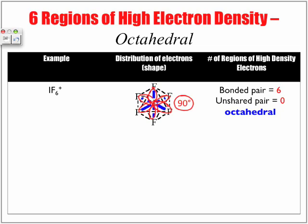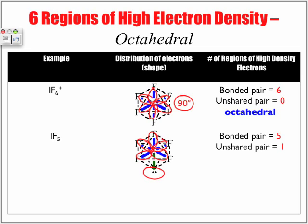Now we're going to add an unshared pair for our next example: IF5. We have one iodine as the central atom, five bonded pairs of electrons, and one lonely unshared pair — five bonded, one unshared, giving us a total of six regions. But it's no longer octahedral; it's considered square pyramidal.